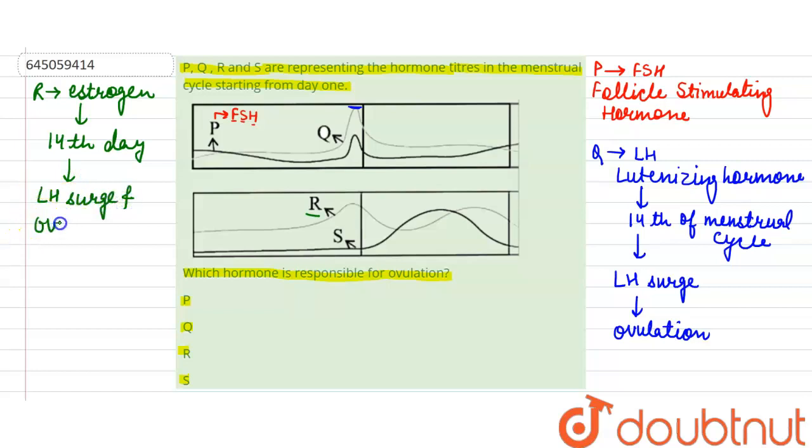Now the last hormone is S, which represents progesterone. Progesterone reaches its peak level during the luteal phase of the menstrual cycle.